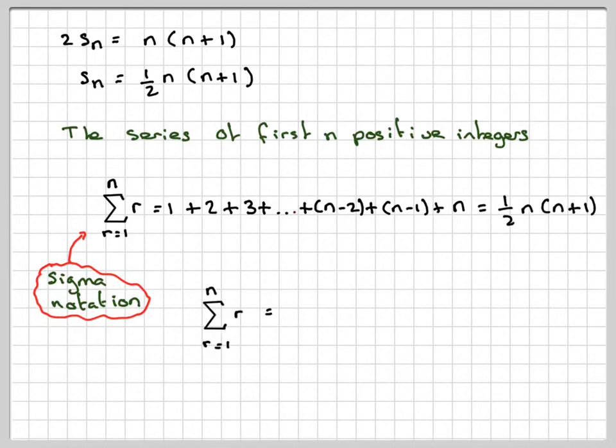So the sum of the first n positive integers, or n natural numbers if you don't include 0 as a natural number, is going to be sigma r from r equals 1 to n equals a half of n times n plus 1. This is a result that is worth remembering.